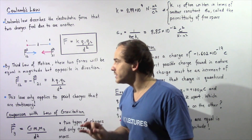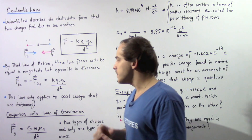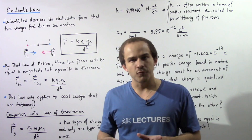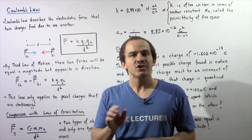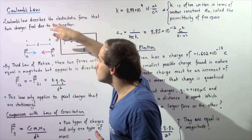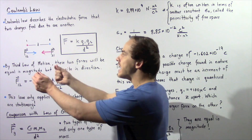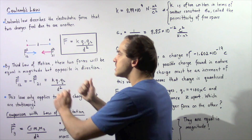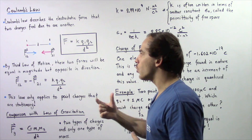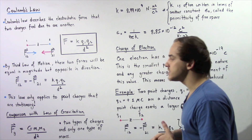Two very important distinctions should be made about Coulomb's law. Unlike the law of universal gravitation, in which the force is only attractive, Coulomb's law describes not only attractive forces but repulsive forces as well. If two point charges have the same exact charge, they will repel one another and the two forces point in opposite directions. So Coulomb's law works for both attractive and repulsive forces.